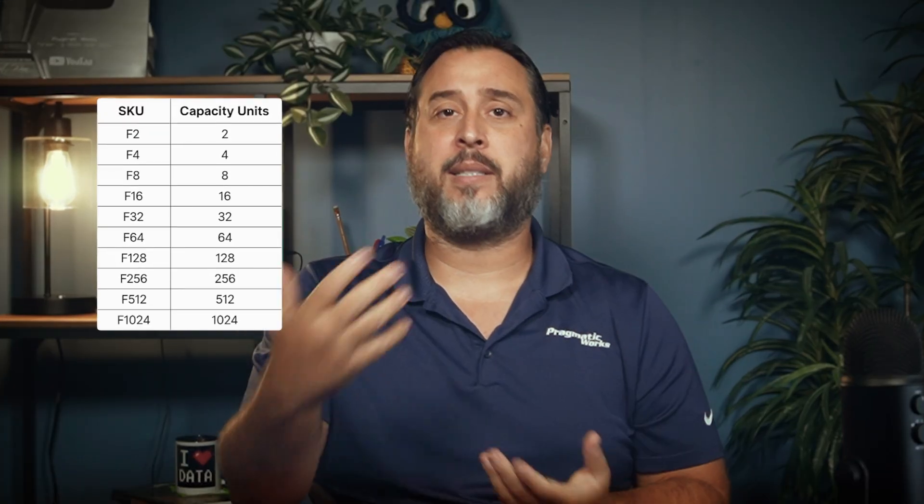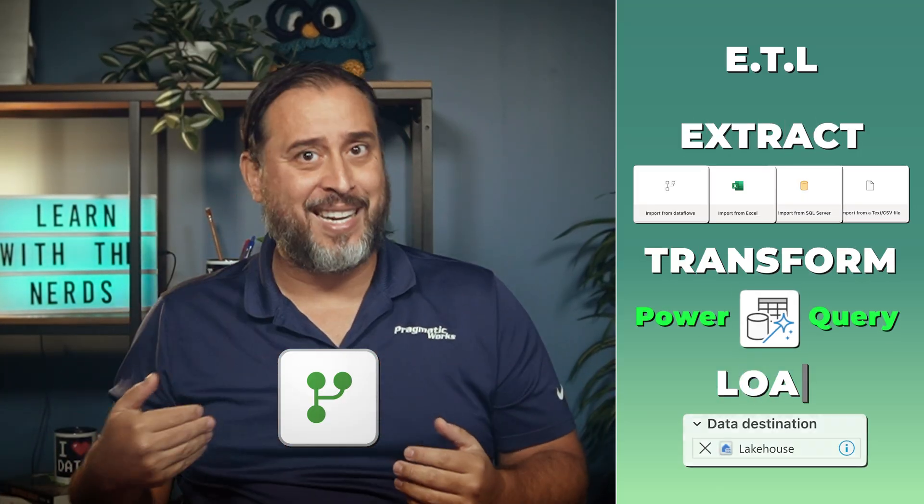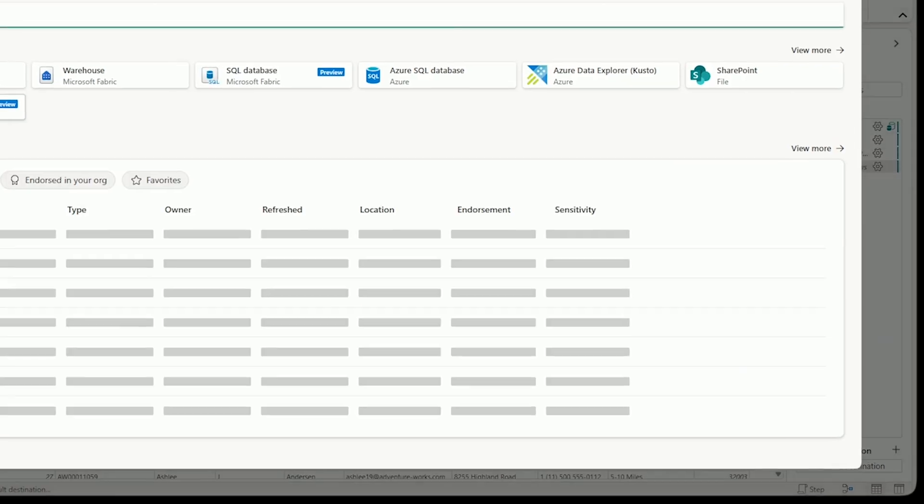Maybe you haven't been using them — maybe earlier on there were some things that were missing, some features that weren't there, or maybe you weren't liking the impact it had on your capacity when looking through the metrics app. Dataflows Gen 2 is really meant to be that UI-driven experience for ETL inside of Fabric. It allows you to connect to a variety of sources, transform the data taking advantage of Power Query, and then land that data in some sort of destination. It's the most direct translation for those coming from a Power BI background into Fabric, because it's Power Query.